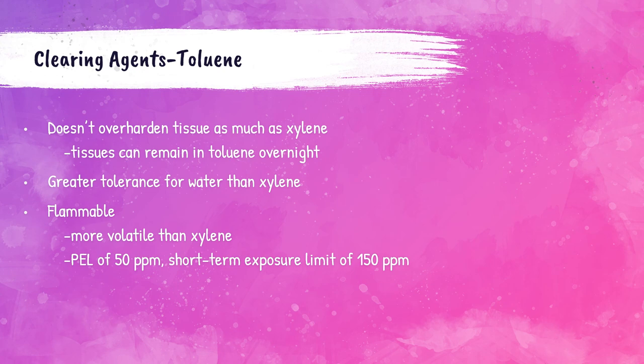Toluene is another clearing agent that does not over-harden tissue like xylene does, and tissue can be left in toluene overnight. This chemical is flammable and becomes vapor quicker than xylene; it has an OSHA PEL of 50 parts per million.